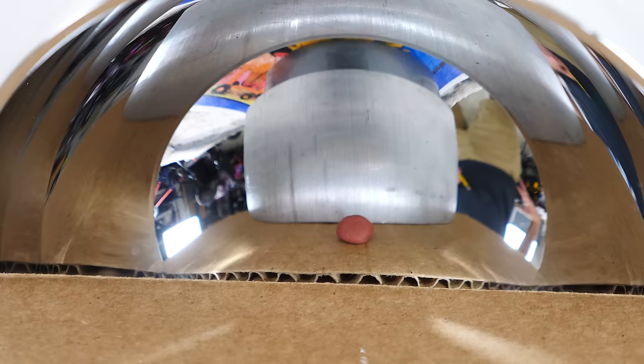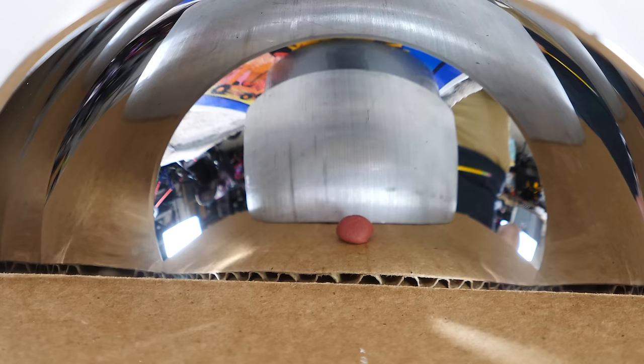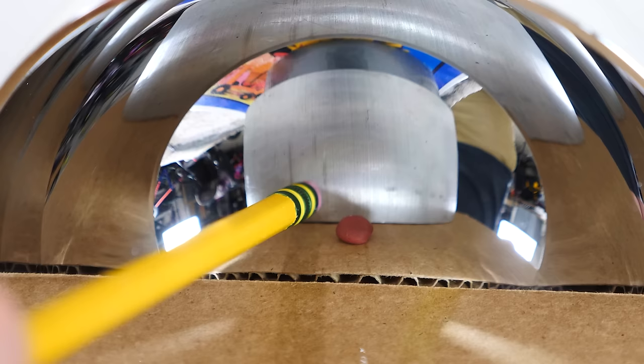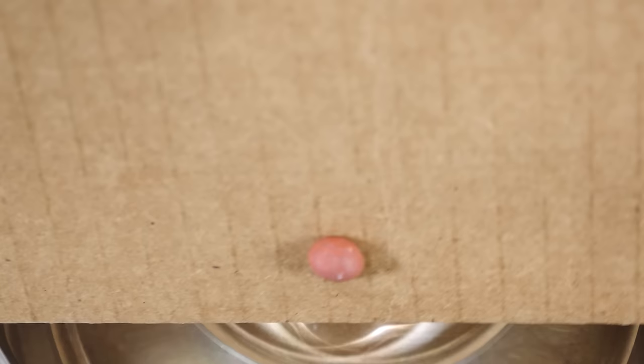So the hemispherical mirror can make for some really cool illusions. For example, look at this red piece of clay I put in there. Now watch what happens when I try to knock it off the cardboard. Can't get it. That's because it's not there. It's actually on the bottom side of the cardboard here.